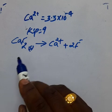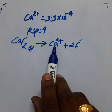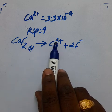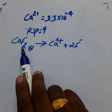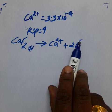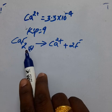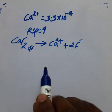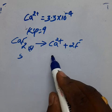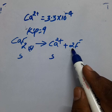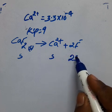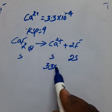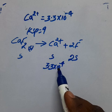From the dissociation of CaF₂, the stoichiometry tells us that if calcium ion concentration is 3.3 into 10 raised to minus 4, then the fluoride ion concentration is twice that value, i.e., 6.6 into 10 raised to minus 4. Calcium ion concentration is 3.3 into 10 raised to minus 4.